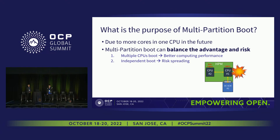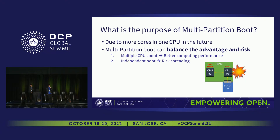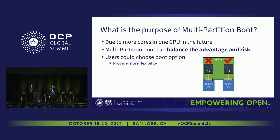If you want higher computation and better performance, you can choose the multi-CPU boot mode, meaning your legacy and non-legacy CPUs can communicate together to get higher performance. If you don't want too much computation concentrated and want to lower the risk, you can choose the independent boot mode — providing risk spreading with multi-DCSCM. If one CPU or one DCSCM fails, the other systems can still work normally. This gives more flexibility to the user: you can implement multi-partition boot in your system and switch between the two boot modes based on your application.